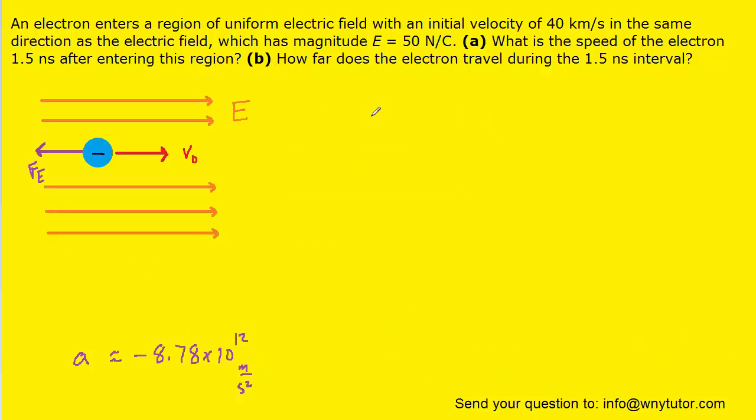Now, from kinematics, we know that the final velocity of an object equals its initial velocity plus the acceleration multiplied by the time. We know the initial velocity because it's given to us. Notice it's given in kilometers per second. So, we multiply that by 10 to the 3 to put it into meters per second. And then we're going to add the acceleration that we just determined multiplied by the time. Now, notice for the time we had to multiply it by 10 to the minus ninth to convert it from nanoseconds into seconds.